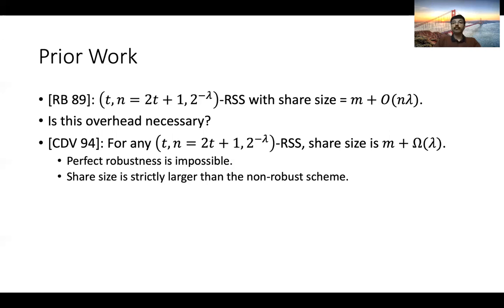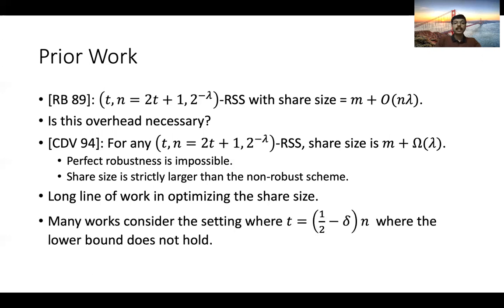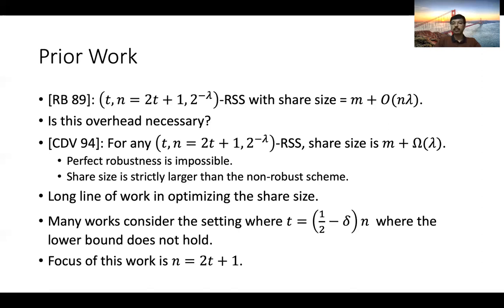A long line of work followed trying to optimize the share size to achieve this lower bound. I remark that there are many exciting works considering the setting where T = (1/2 - delta) * N for arbitrarily small delta. In this setting, the lower bound of Carpentieri et al. does not hold, and one can obtain a construction with share size M + O(1). However, the focus of this work is when N = 2T + 1, where the lower bound of Carpentieri et al. holds.